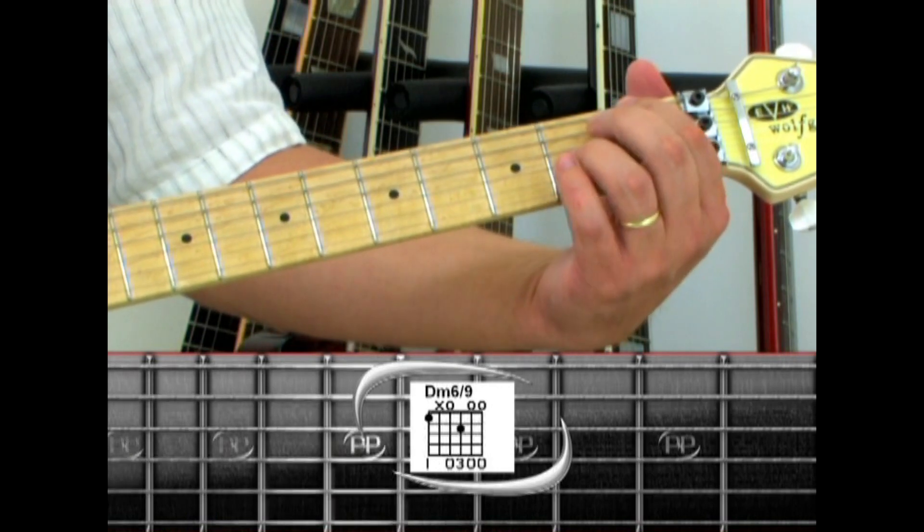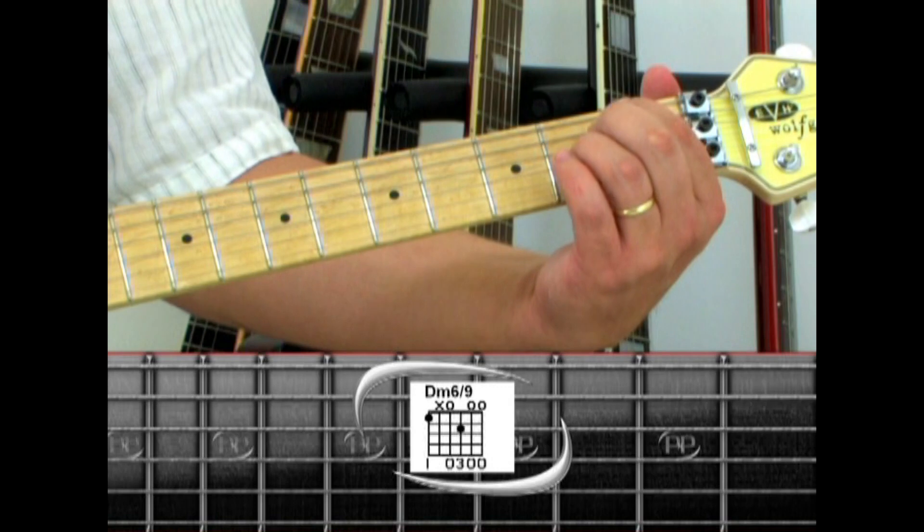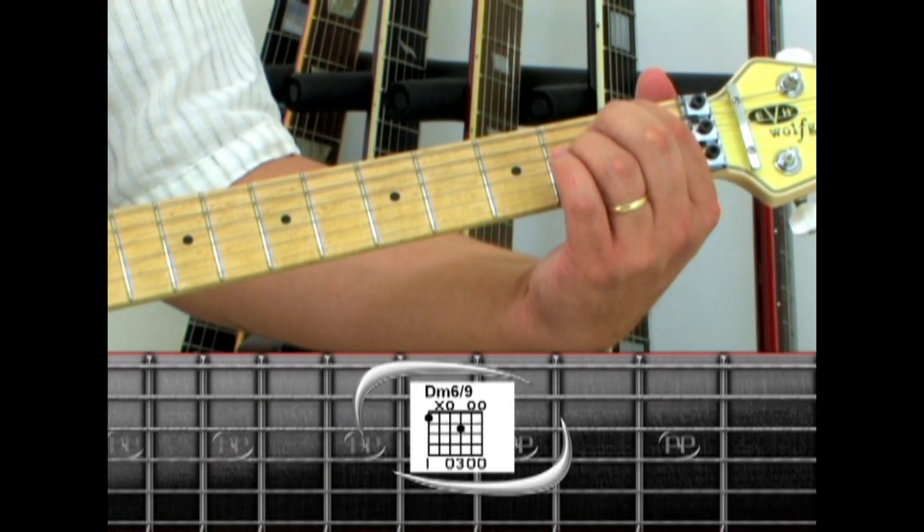Instead of strumming this, Eddie holds this chord and picks strings 6, 4, 3, 1, 2, 3.